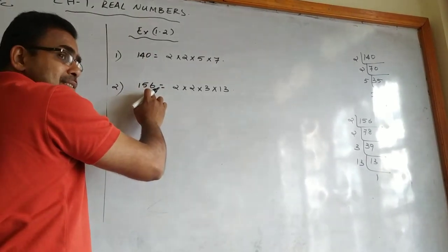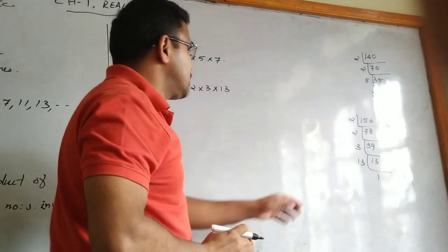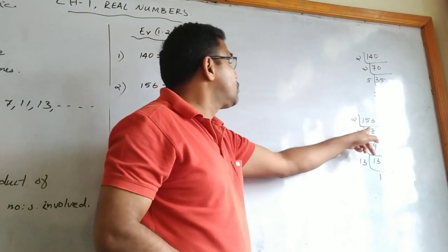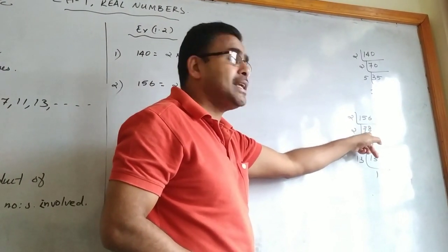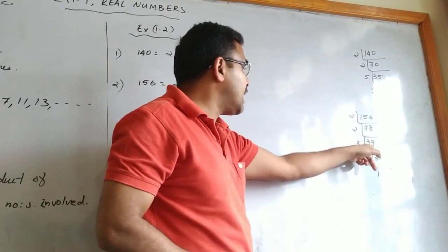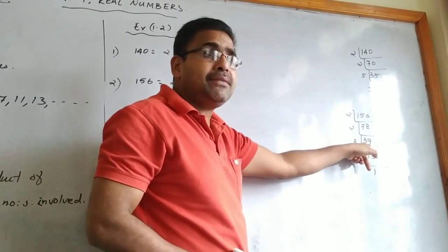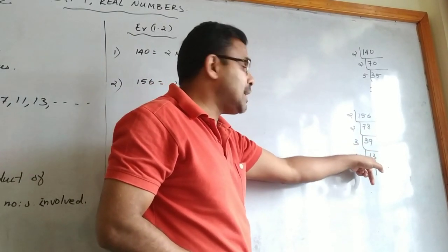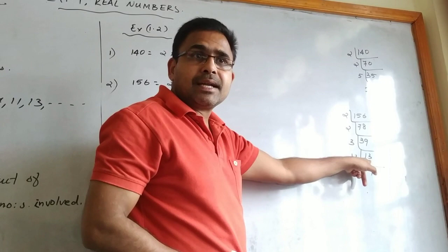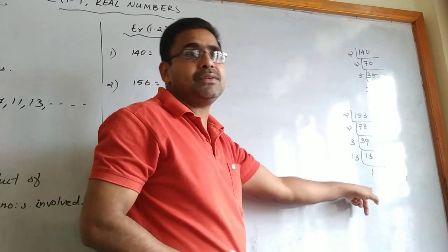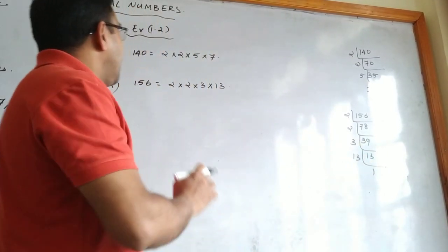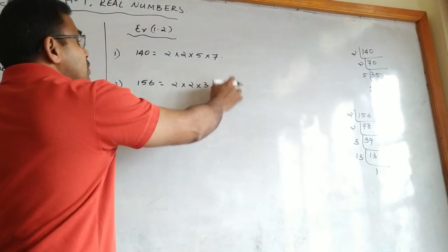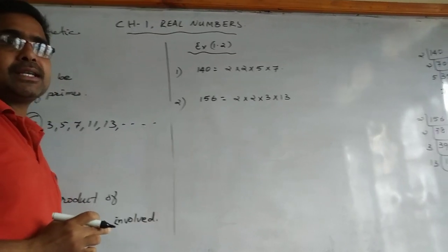Next question is 156. We start with 2: dividing 156 by 2 gives 78, dividing 78 by 2 gives 39, dividing 39 by 3 gives 13. Since 13 is already a prime number, dividing 13 by 13 gives 1. So the prime factors of 156 = 2 × 2 × 3 × 13.